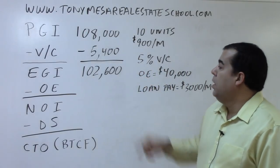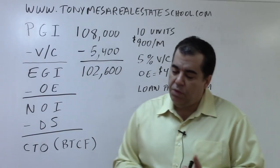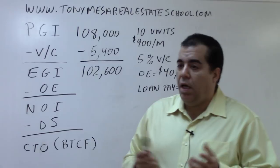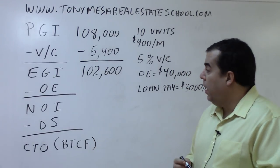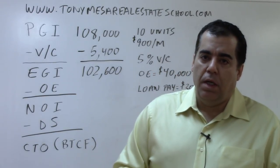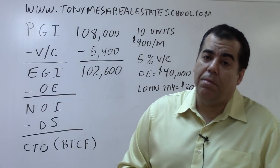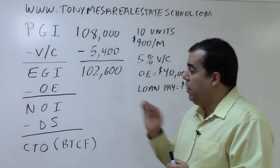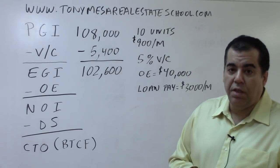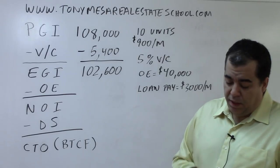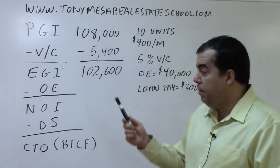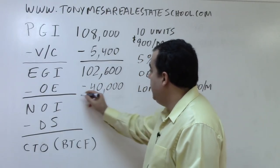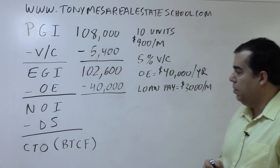From the EGI we subtract the Operating Expenses. When you're dealing with investment property, you need to assess whether the expense numbers you're given make sense. For example, if you're buying from someone who's owned it for 30 years with no loan, they might not have insurance — but you will need it. Operating expenses include things like property taxes, insurance, maintenance, common area electrical, garbage collection, and property management fees. In this example, the operating expenses are $40,000 for the year.